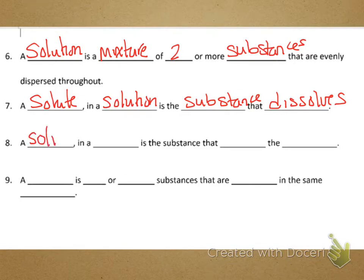The next word is a solvent. And that does the dissolving. So if we had boiling water, water would be the solvent because it would be dissolving the sugar, which is the solute that I put in there.